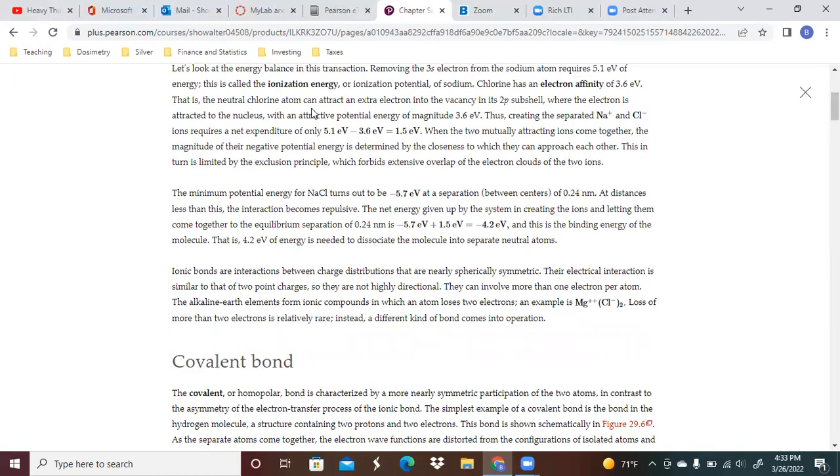The electron is attracted to the nucleus with an attractive potential energy of magnitude 3.6 eV. Thus, creating the separated sodium ion and chlorine ion requires a net expenditure of the difference between the two, 1.5 eV.